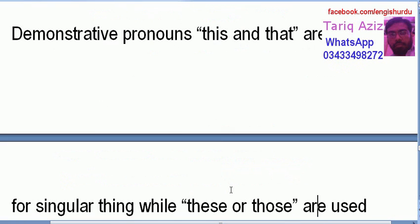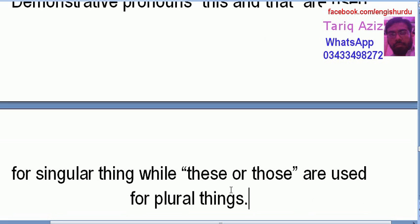Demonstrative pronoun: this and that are used for singular things. This اور that ایک چیز کے لیے استعمال ہوتا ہے — یعنی singular، ایک چیز۔ While these and those are used for plural — ایک سے زیادہ چیزوں کے لیے ہم these یا those کا استعمال کرتے ہیں۔